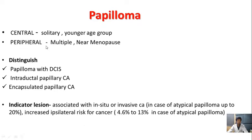Papillomas are generally two types: central and peripheral. The central type is generally solitary, present beneath the nipple-areolar region, and generally observed in younger age groups. Peripheral papillomas are usually multiple and observed in older age groups. It is important to distinguish papilloma from variants — papilloma with ductal carcinoma in situ, intraductal papillary carcinoma, or encapsulated papillary carcinoma. Intraductal papilloma is associated with in-situ or invasive carcinoma, especially in case of atypical papilloma up to 20%, and is associated with increased ipsilateral risk of cancer of 4.6 to 13% in case of atypical papilloma.